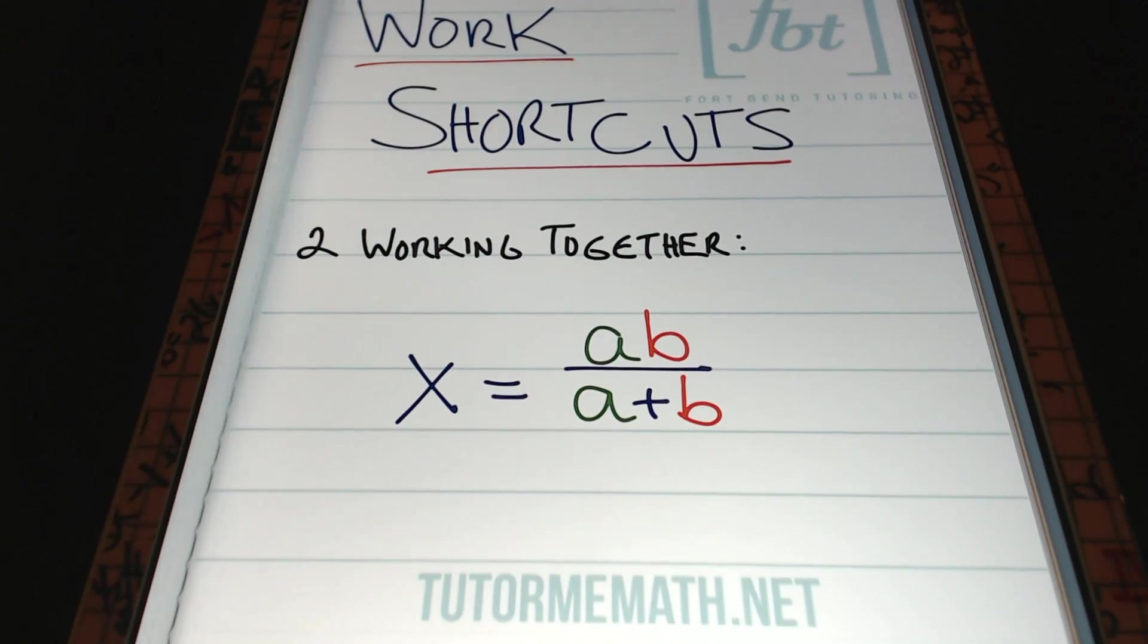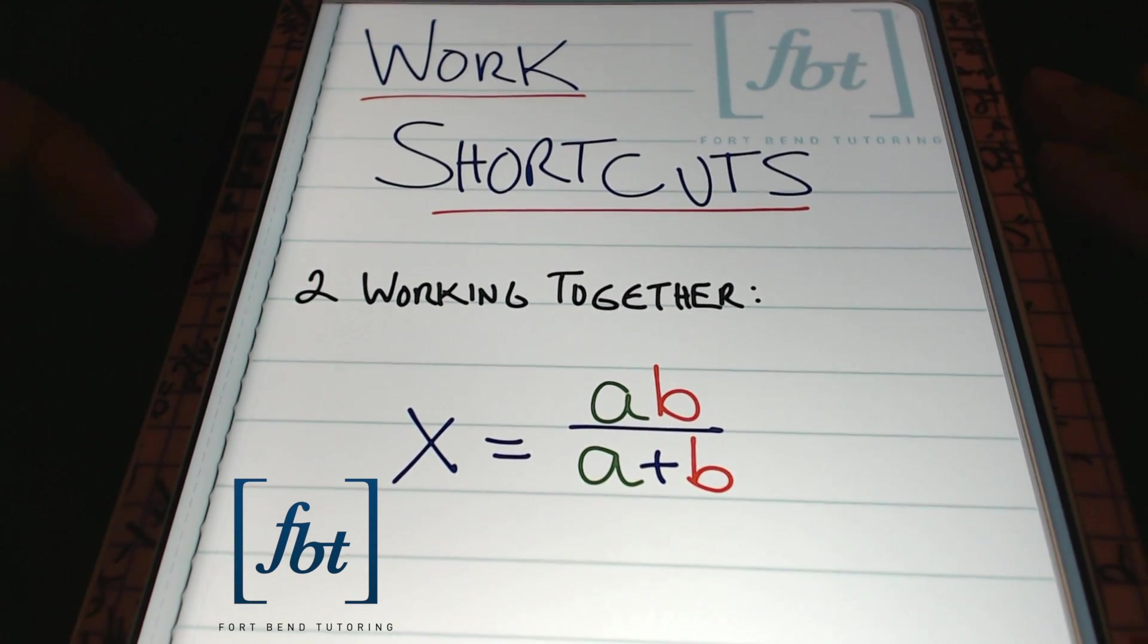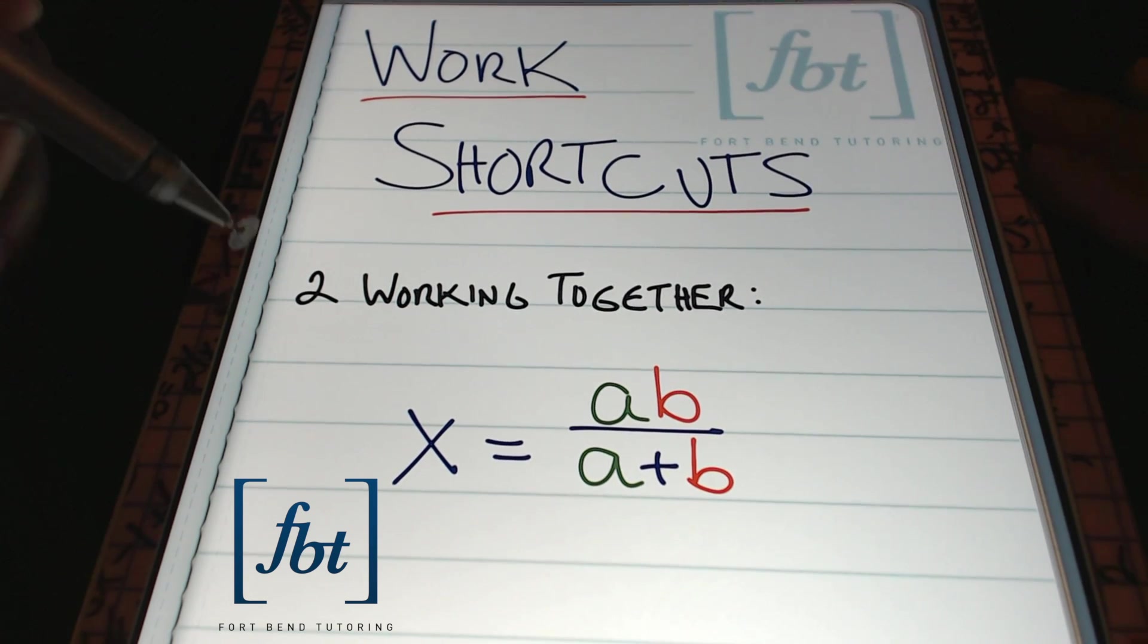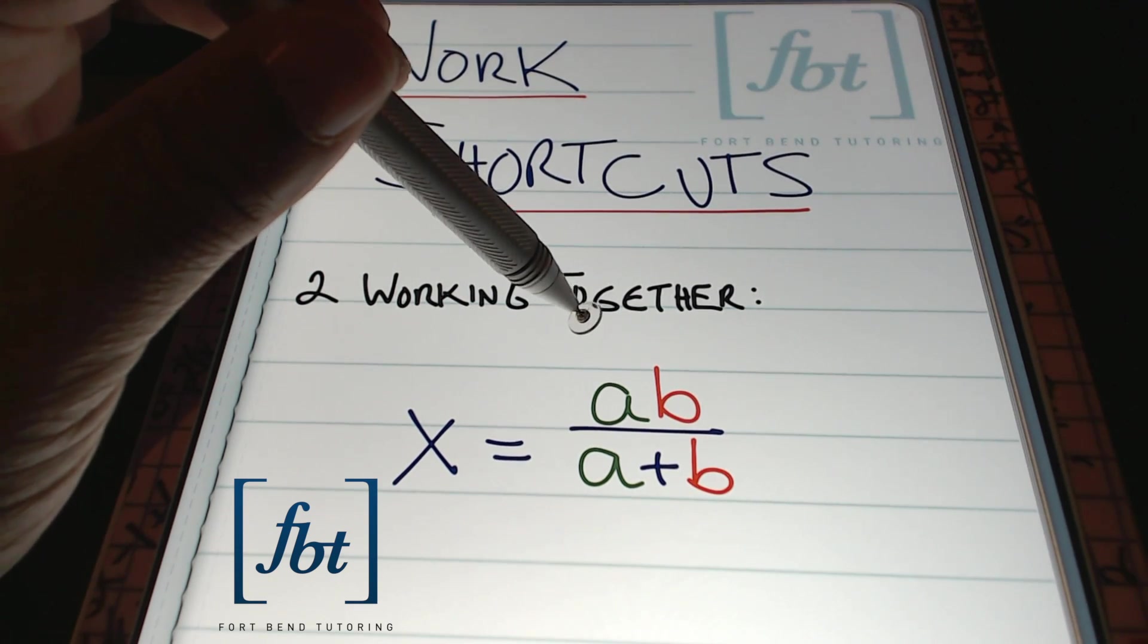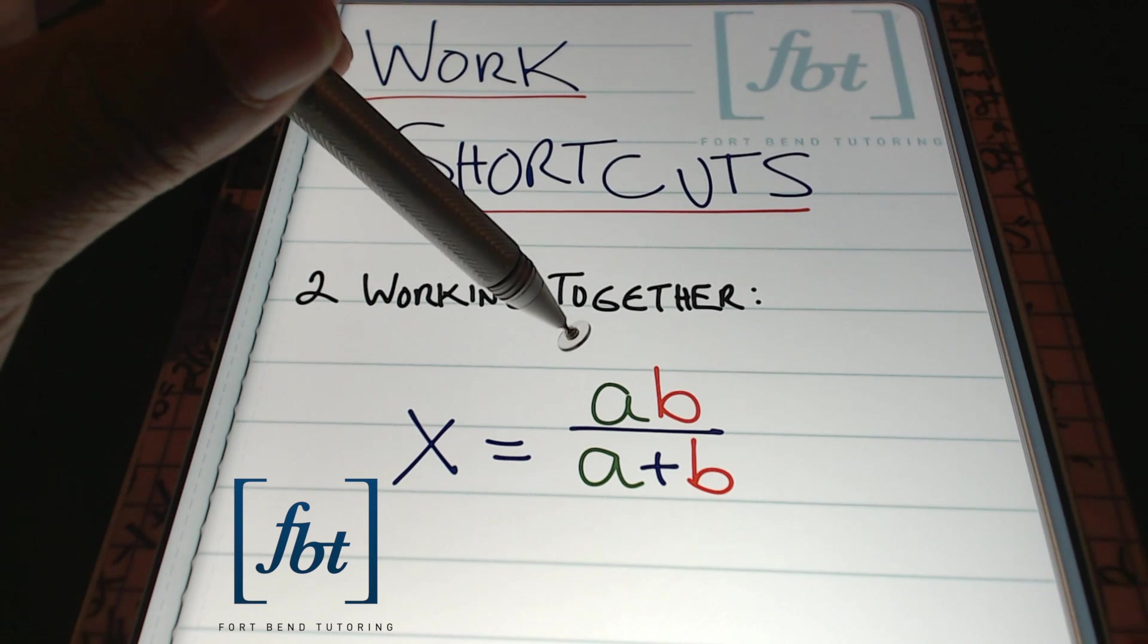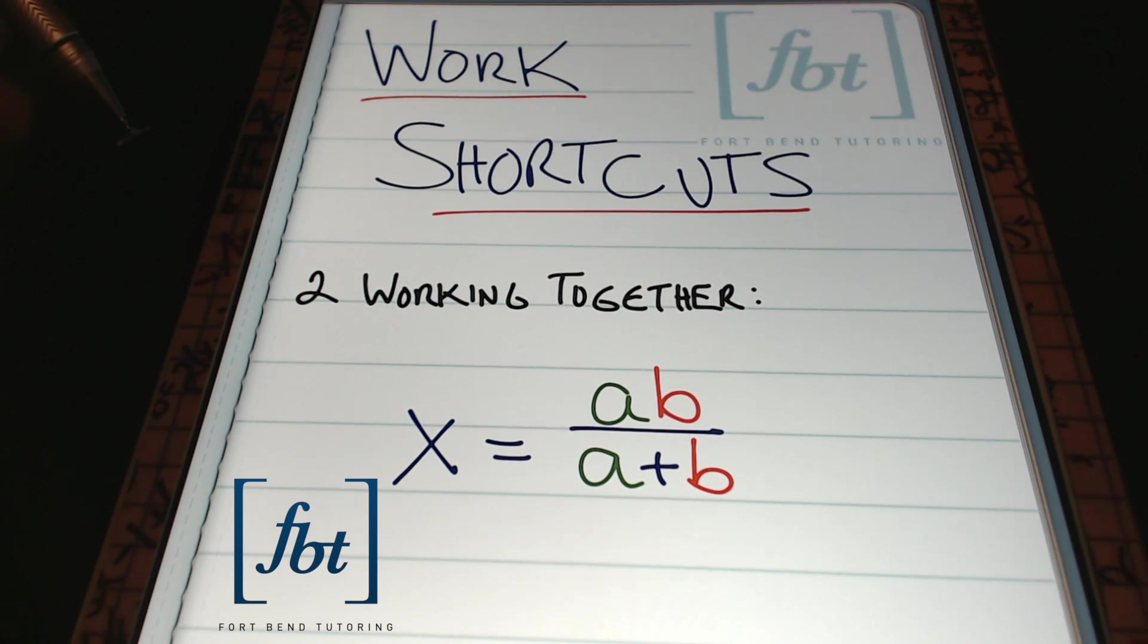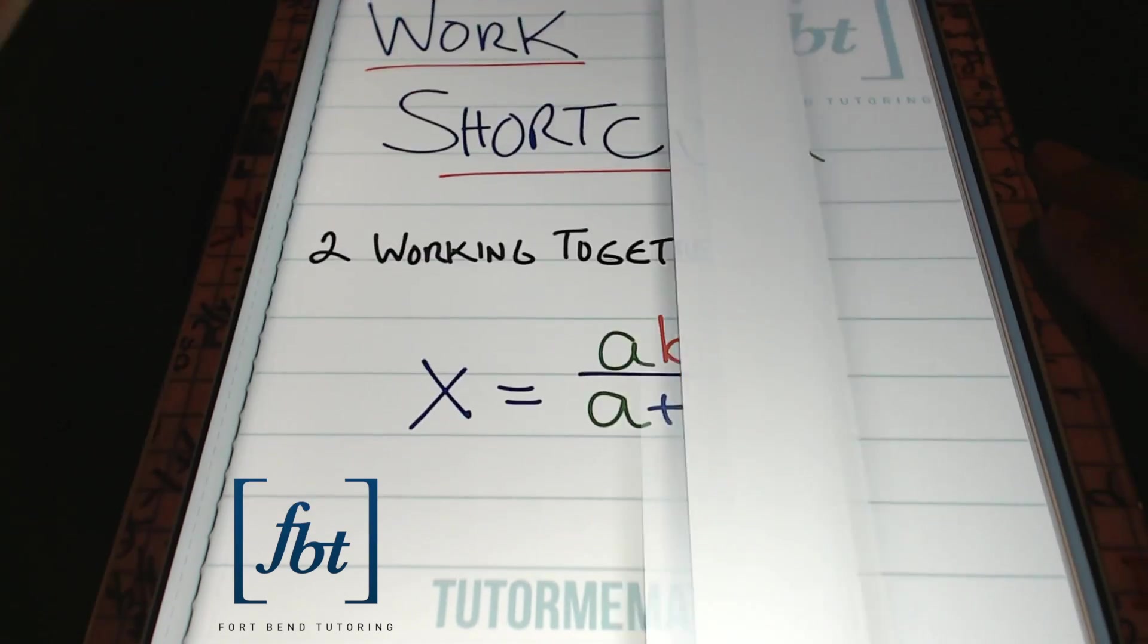So let's go ahead and get into the festivities, because I want to show you guys a few of these work shortcuts that I've been waiting, dying to show you. The first shortcut I want to show you is that if you have two people working together, two machines working together, if you have two inlet pipes, two outlet pipes working together, this formula right here will give you the result that you're seeking.